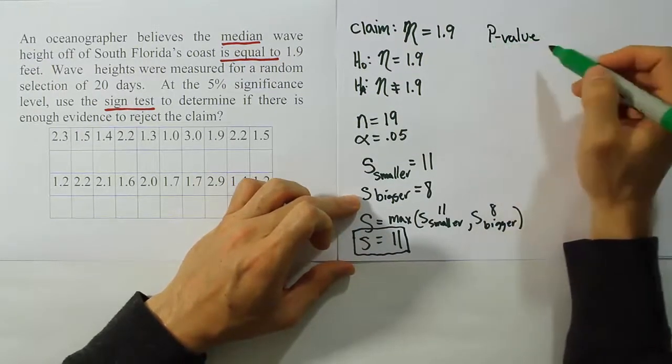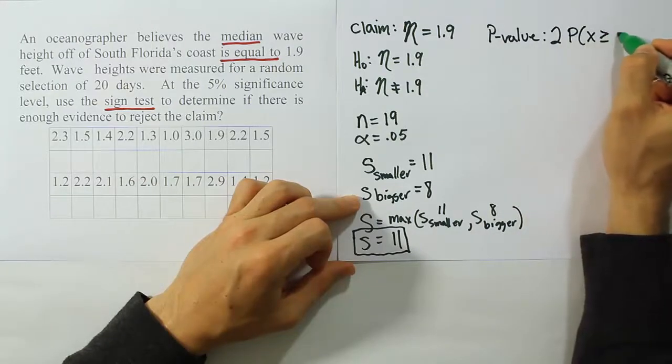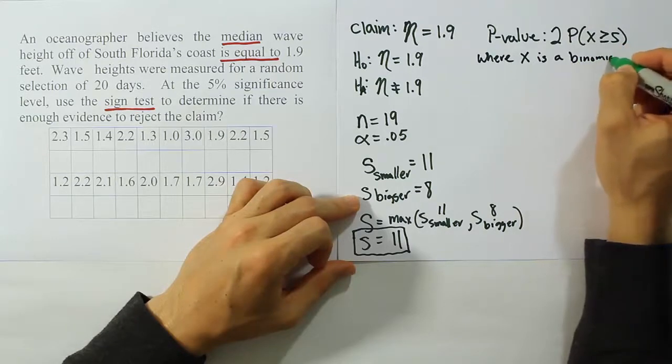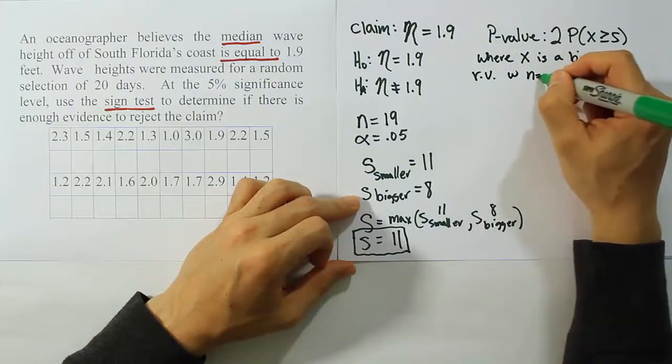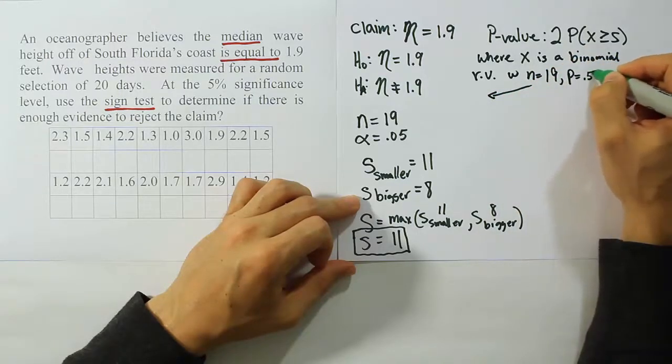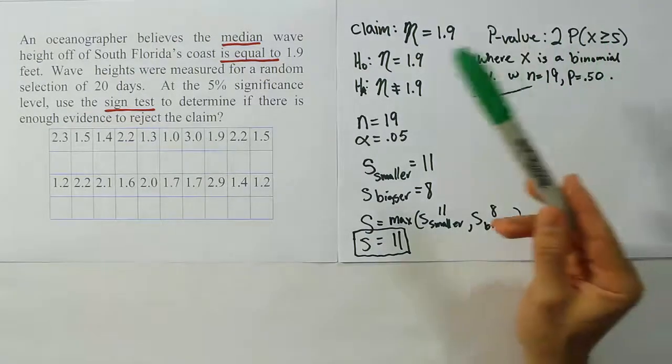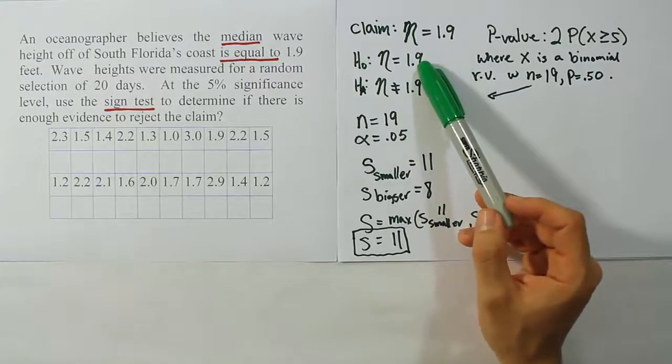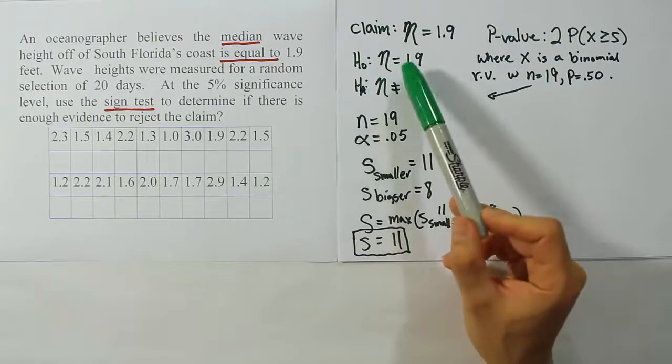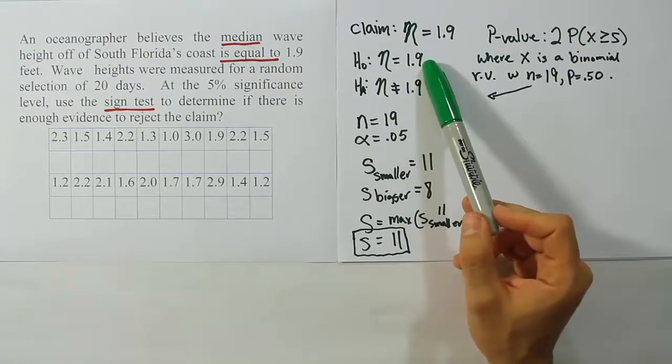We don't use a rejection region. We use a p-value method instead. The p-value method for the two-tailed test is going to be two times the probability that X is greater than or equal to S. Where X is a binomial random variable with N equals to, in this case 19, and p equal to 0.50.